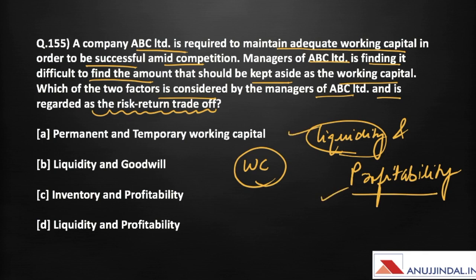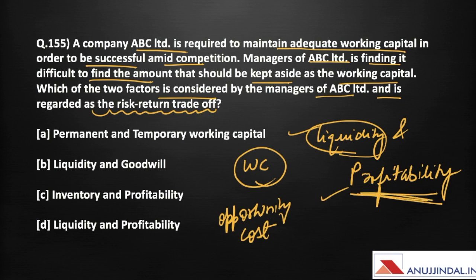For example, by maintaining a large investment in current assets like cash and inventory, the firm reduces the chances of production stoppages and lost sales from inventory shortages or inability to pay creditors. However, as the firm increases its investment in working capital, there is no corresponding increase in profitability, as the same funds could be used for better investment proposals. There is an opportunity cost involved, so profitability does not rise with increased working capital.